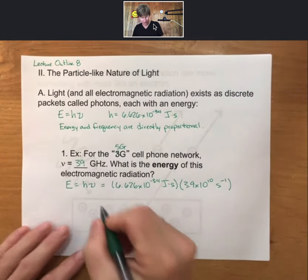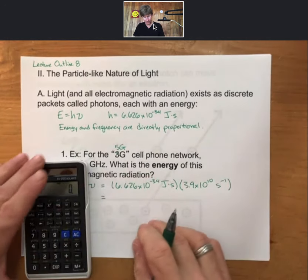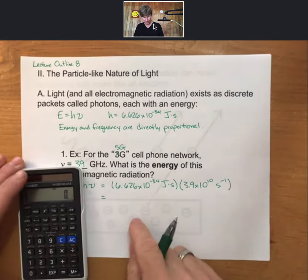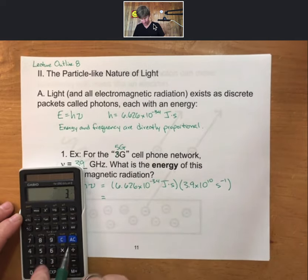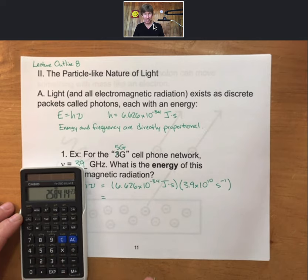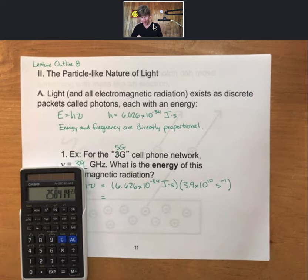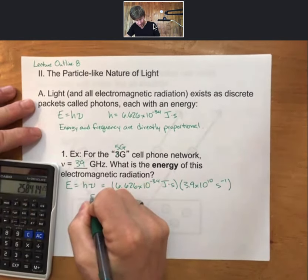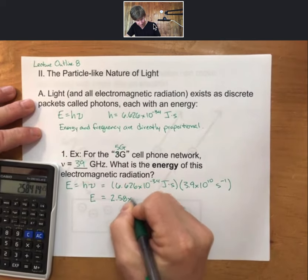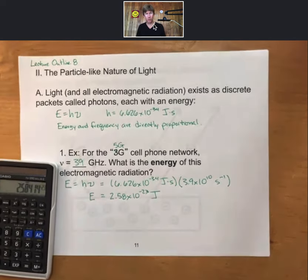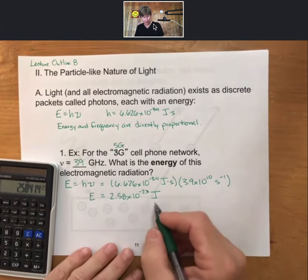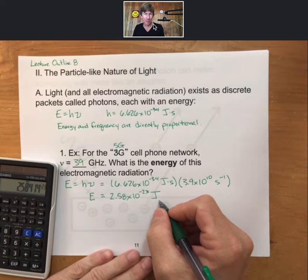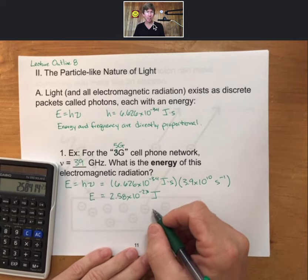We can see that our seconds will cancel out, leaving us with joules as a unit. And we get 2.58 times 10 to the minus 23rd joules, an extremely small amount of energy, but you get enough of these photons together, you get enough of these together, when you get moles of them, you will have enough to create some nice energies.